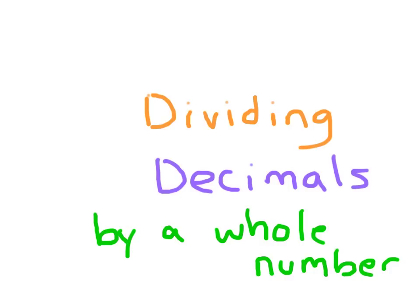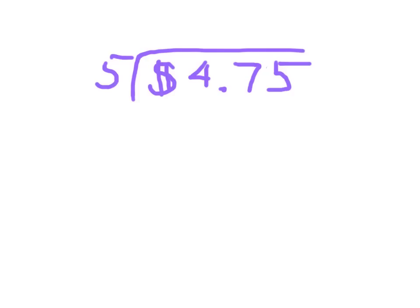Let's look at dividing decimals by a whole number. It might help us to start with a money problem. If we had $4.75 and we wanted to divide it amongst 5 friends, how much would we give each friend?